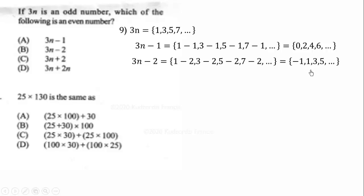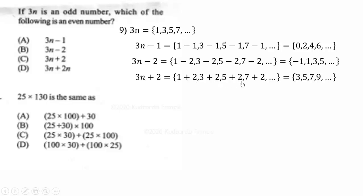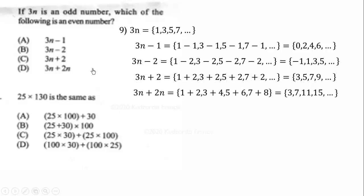Then 3N plus 2 gives us 3, 5, 7, 9 — these are not even numbers either. Now, 3N is an odd number and 2N is an even number, so 3N plus 2N gives odd plus even, which results in odd numbers — not even. Therefore, the expression that always gives an even result is 3N minus 1. So the correct answer is A.